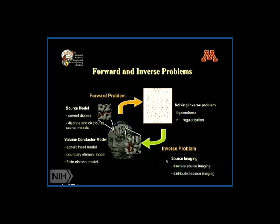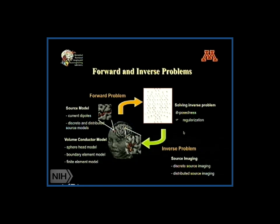I will avoid mathematical details on how to solve the source imaging problem, but graphically, solving it requires forward modeling, source modeling, and then solving an ill-posed regularization and signal processing problem. There is a need for engineering innovation to address this, but the good news is that a great deal has been accomplished to achieve much more reasonable spatial resolution from EEG.